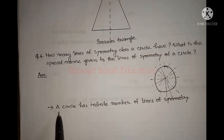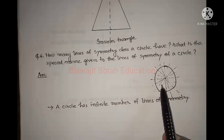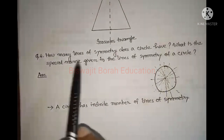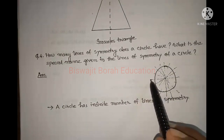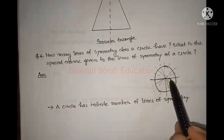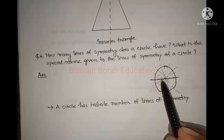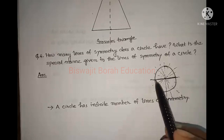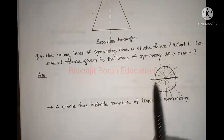So a circle has infinite lines of symmetry. And the special name given to the lines of symmetry of a circle — the line which passes through the center of a circle is called the diameter. So the special name of the line of symmetry of a circle is diameter.